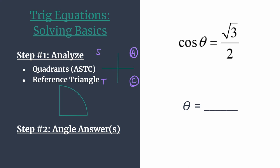Let's sketch those angles — one angle in quadrant 1, one angle in quadrant 4 — and that's part of what we need for our final answer. The second thing we want to do is find our reference triangle. To do this, we need to recall how cosine and our special right triangles work on the unit circle.